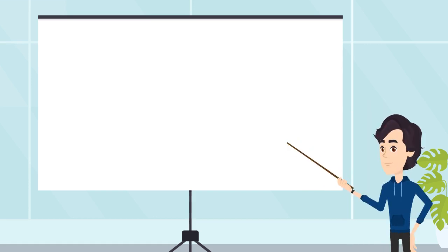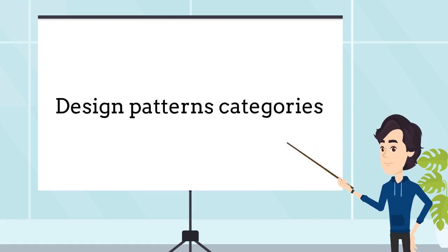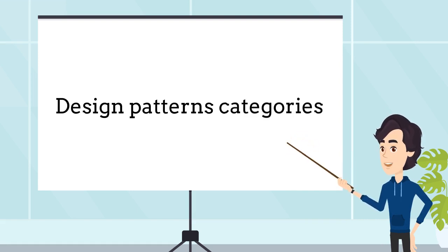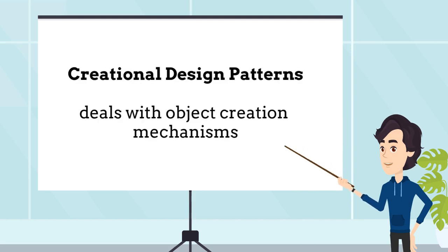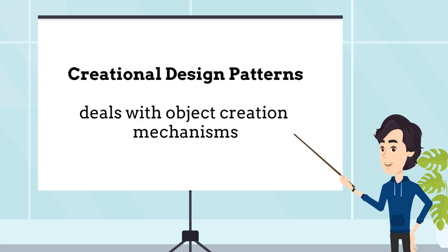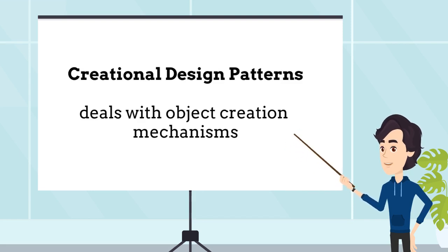Now, let's talk about the categories of design patterns. There are three categories, and each one of them deals with a type of problem in object-oriented programming. The first category is Creational Design Patterns. This category deals with object creation mechanisms, trying to make the code flexible and reusable.